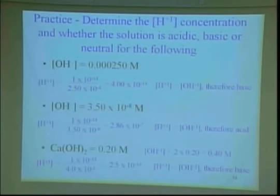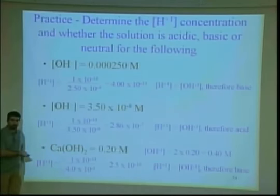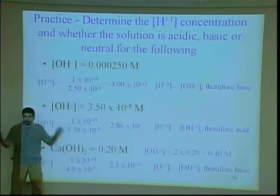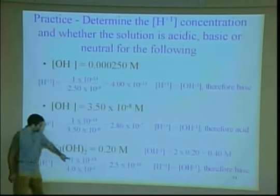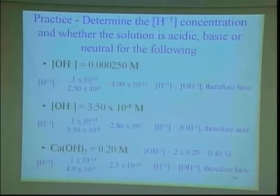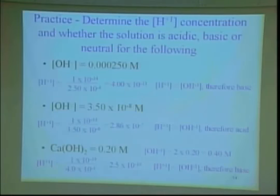For calcium hydroxide, there's an extra step because I give you the total concentration, not just the hydroxide ion concentration. You have to double it because there are two hydroxides for every one calcium hydroxide that dissociates. So take 2×0.20 to get 0.40 molar. Then divide Kw by that: you get 2.5×10⁻¹⁴. Compared to 0.40 molar hydroxide, the hydrogen is a tiny 2.5×10⁻¹⁴ — a really small number. That means there's a whole lot more hydroxide than hydrogen, so it's basic.